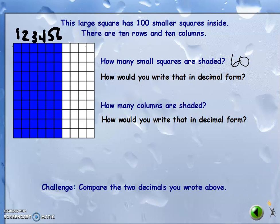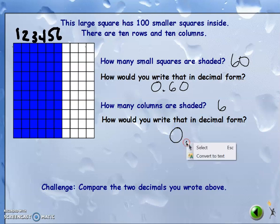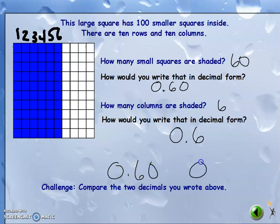So how would I write that as a decimal? That's 60, so zero and sixty hundredths. How many columns are shaded? Six columns. How would I write that as a decimal? Six out of ten columns, so that's zero and six tenths. Let's compare the two decimals we wrote: zero and sixty hundredths, and zero and six tenths.